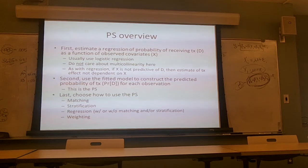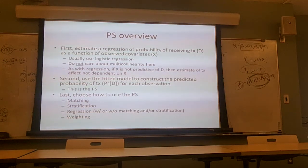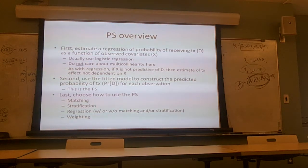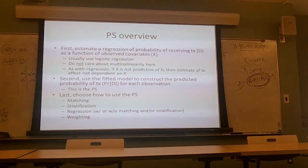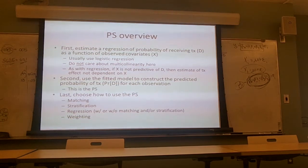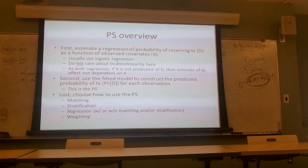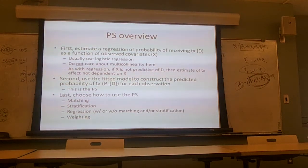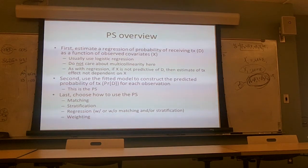The first two steps are straightforward and common: we figure out what observable characteristics we have, run a logistic regression of 'did I get the treatment' as a function of those characteristics, then pop out the predicted probability. Each person gets a value from zero to one representing their likelihood of getting the treatment based on their covariate profile. Then there's the art of it: how to use the propensity score. There are a few different approaches — matching, stratification, and regression weighting.